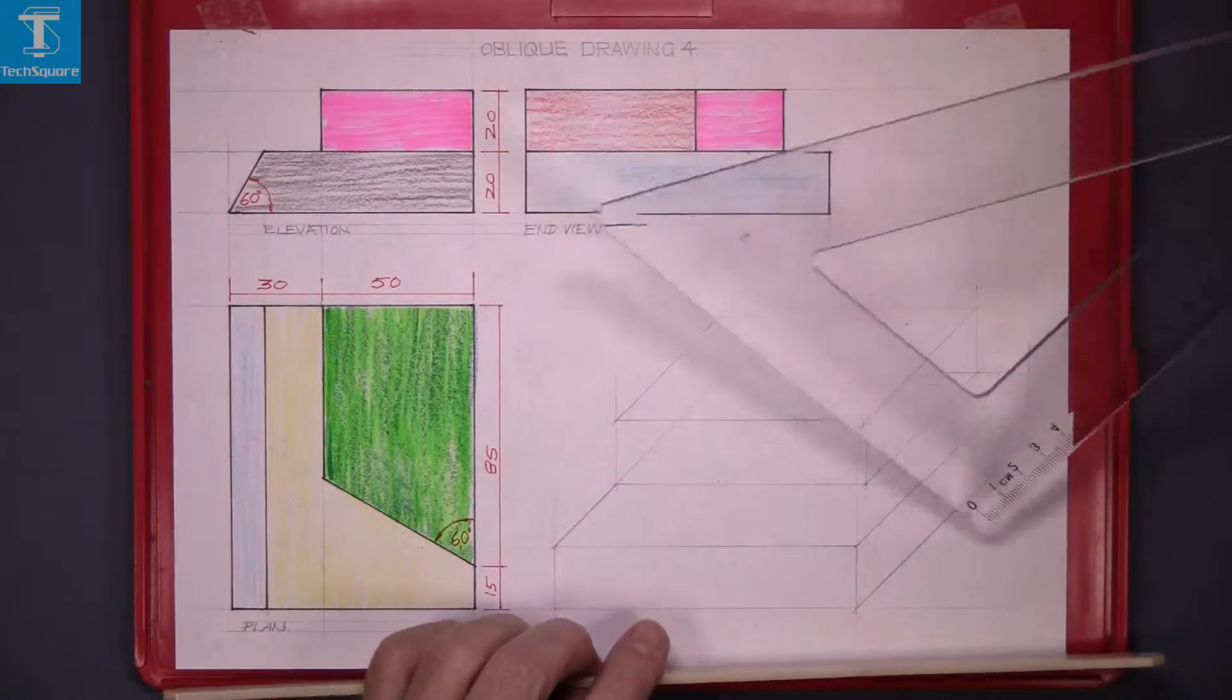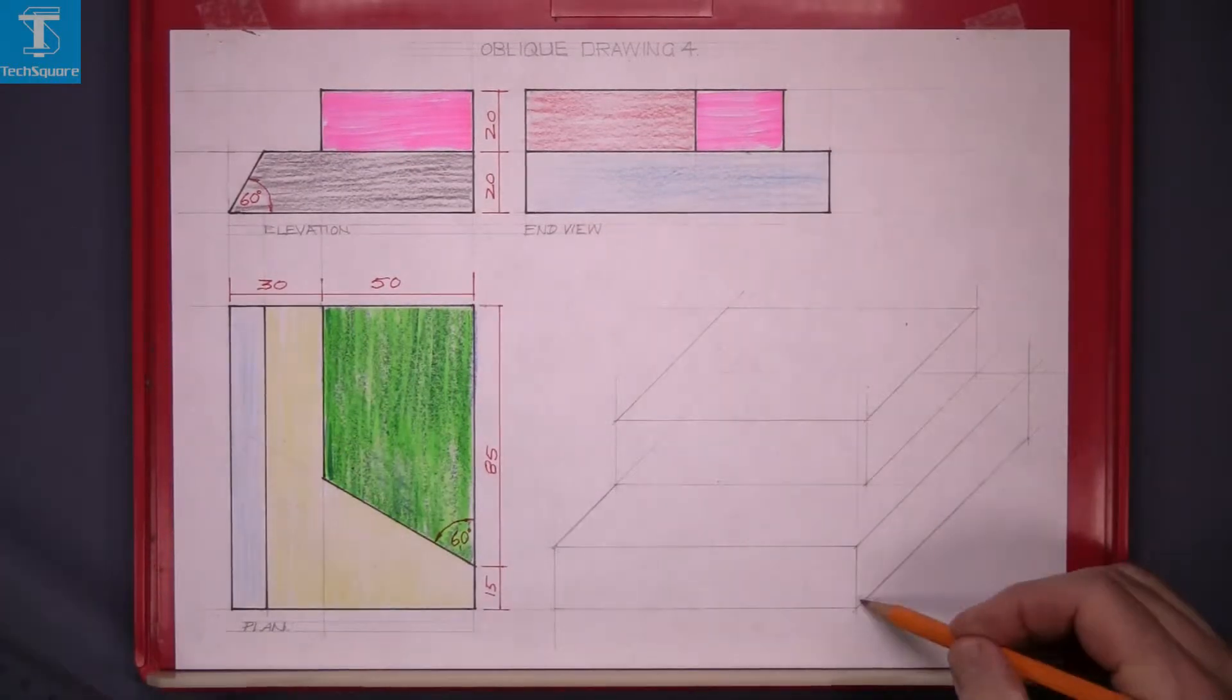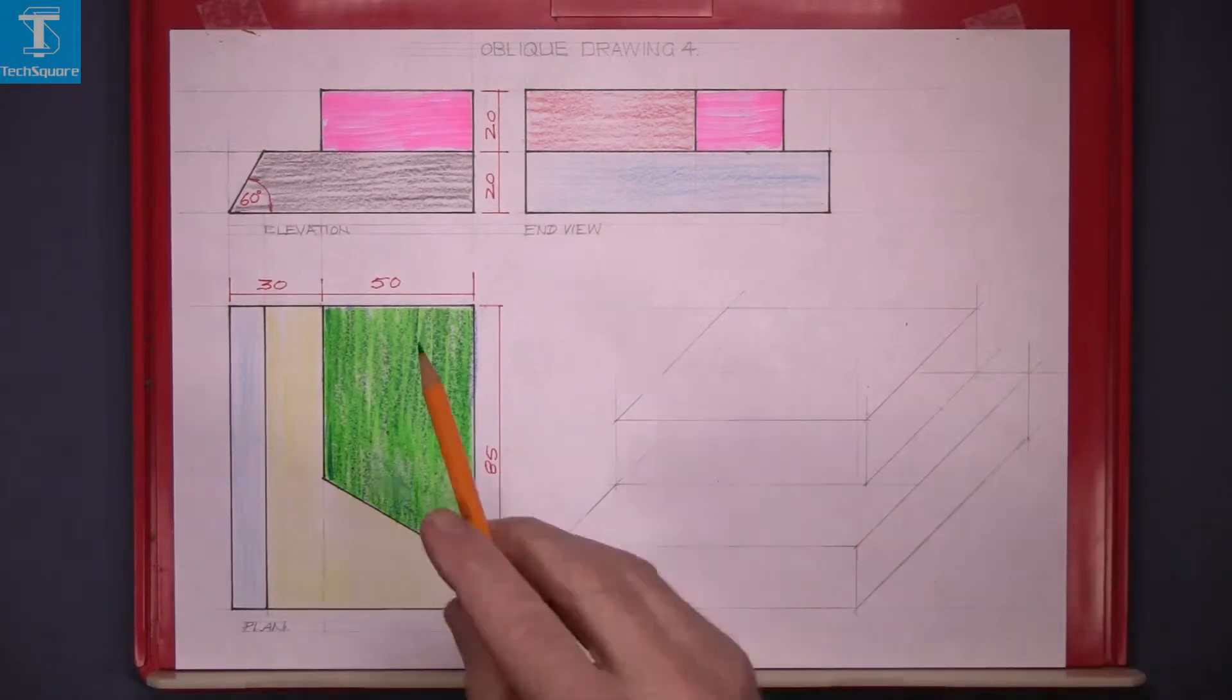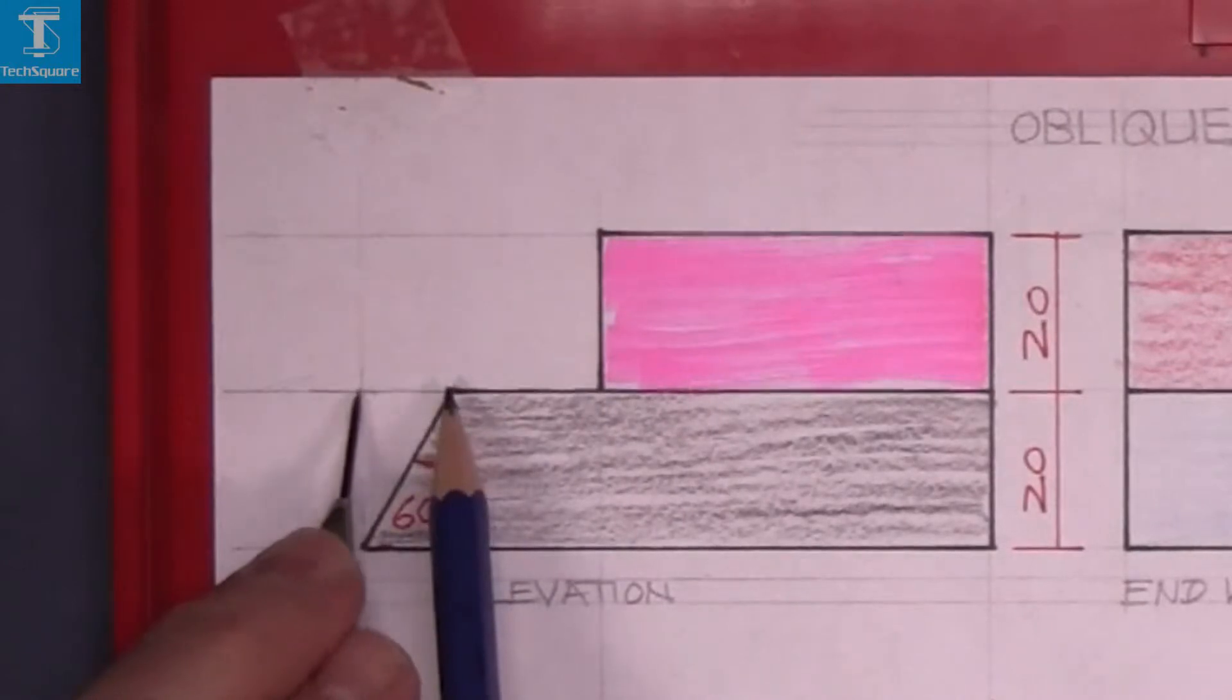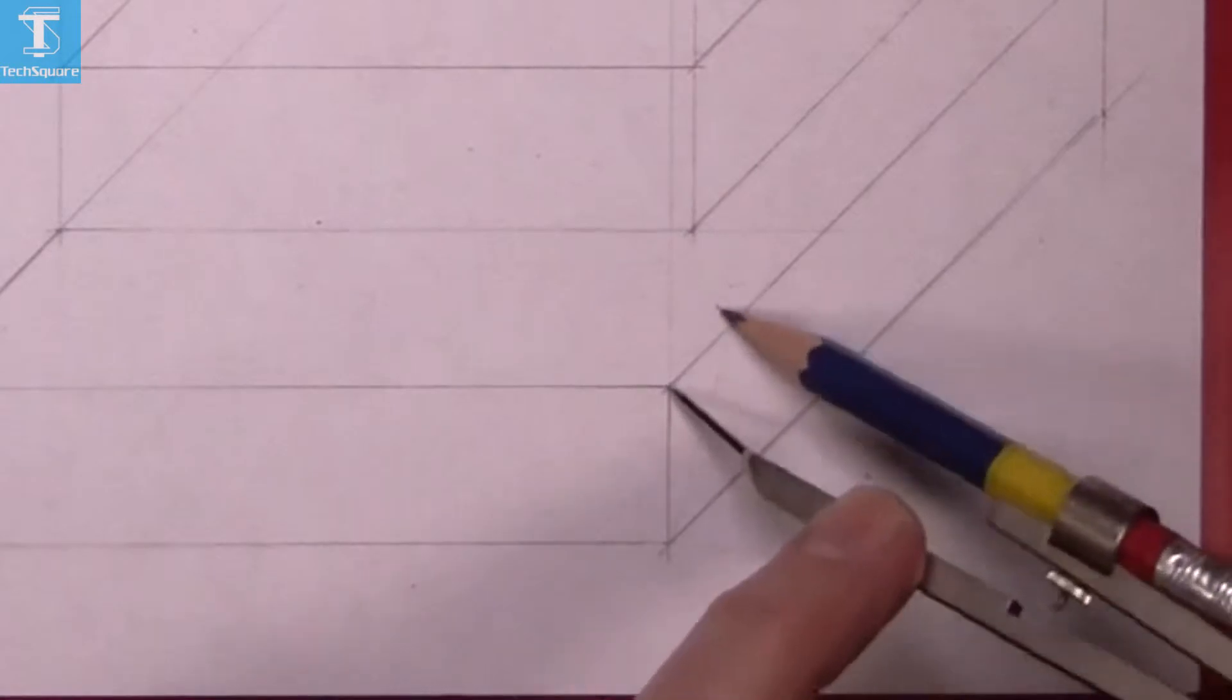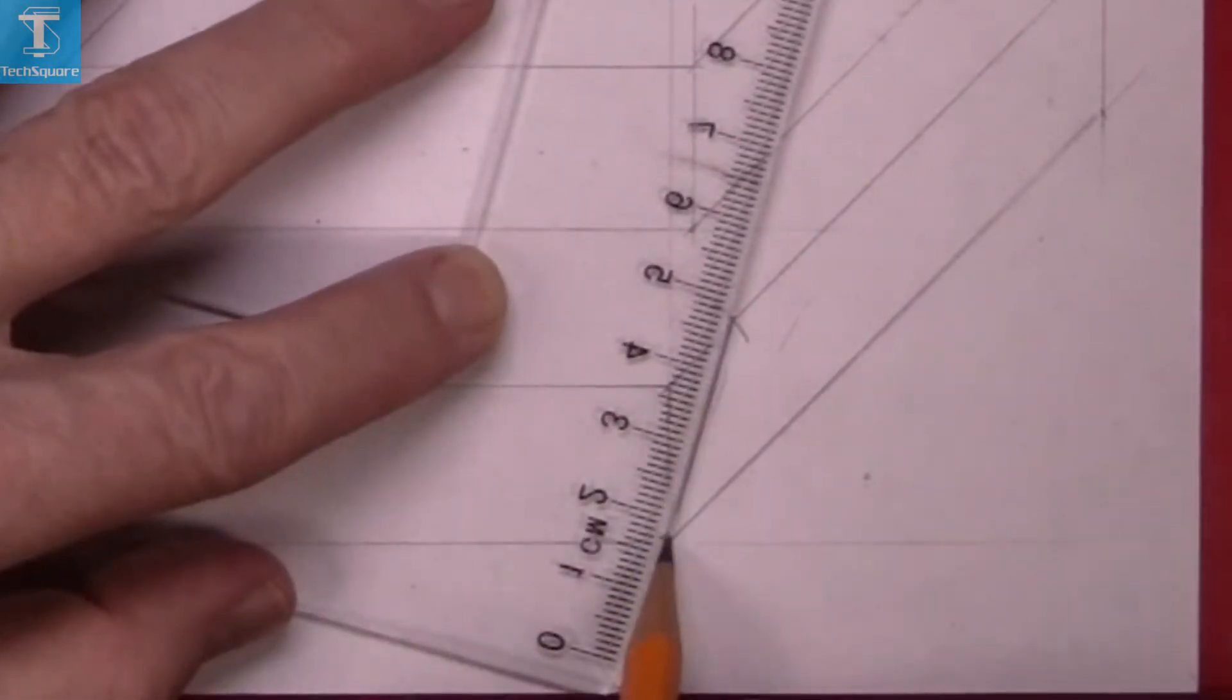The front of this is sloped at 60 degrees, but the 60 degrees set square won't work there because this side here is at an angle. So to get the angle on the corner, we have to set the compass to that distance there. Put the point of compass in the corner and step it back along the line, and join that to the corner. That's your 60-degree angle in this view.